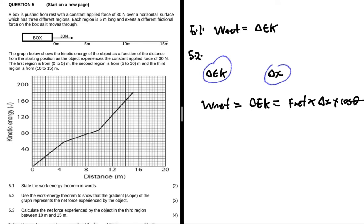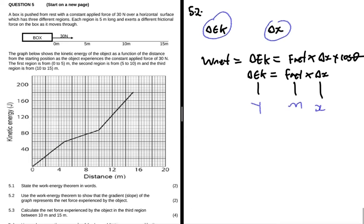In our situation here, cos theta, theta will be zero because you can see the force that has been applied is horizontal. So we're going to have delta EK equals F net multiplied by delta x. Cos of zero is one, so we just have delta EK equals F net multiplied by delta x. Now we have EK on our y and we have F net as our m, our gradient, and then we have the distance as our x.